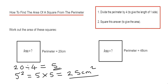Let's move on to example two. This time we have a perimeter of 48 centimeters, and we need to work out the area again. So first, we divide the perimeter by 4 to give us the length of one side.